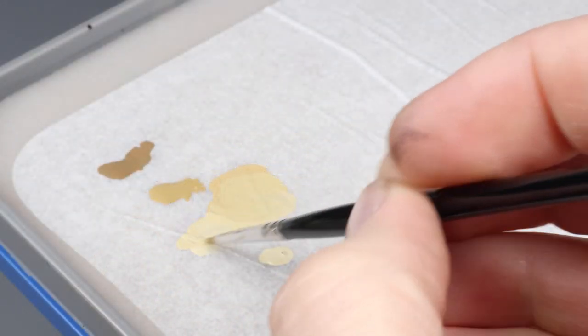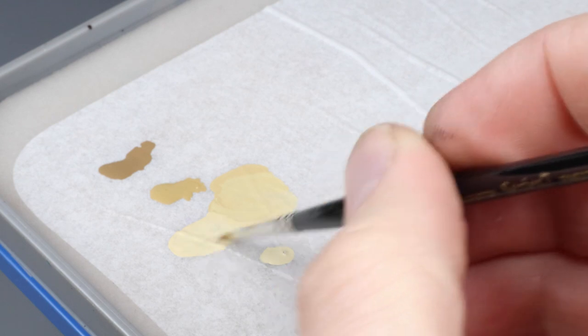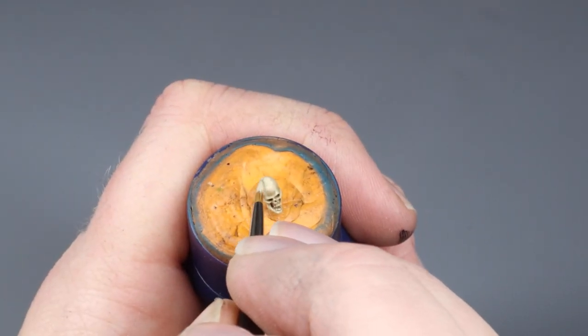Here we mix the Shapti Bone and Screaming Skull to create the same type of 50-50 mix bridge. We keep highlighting this skull in the same manner as we did earlier.